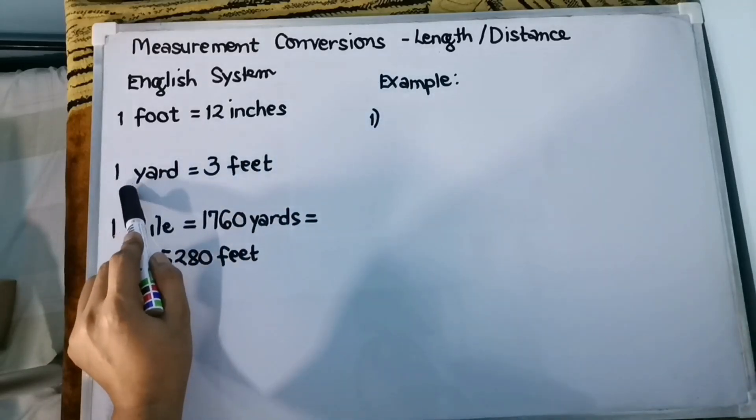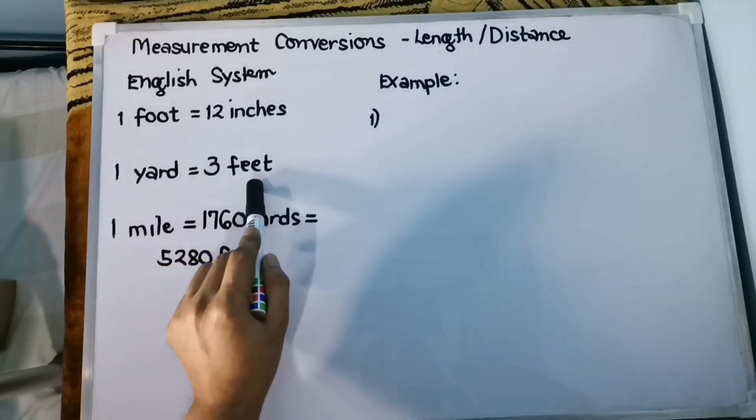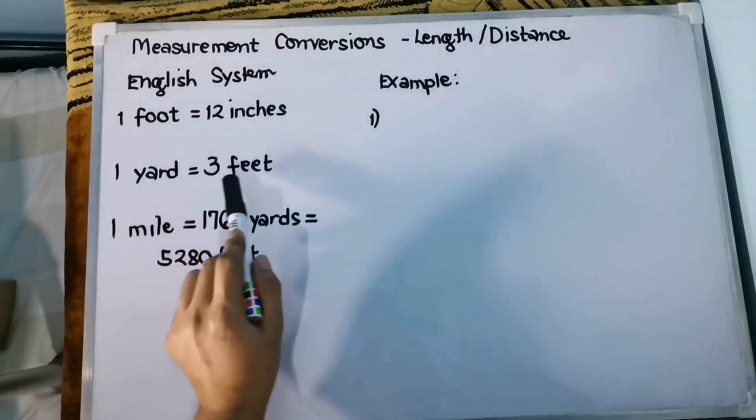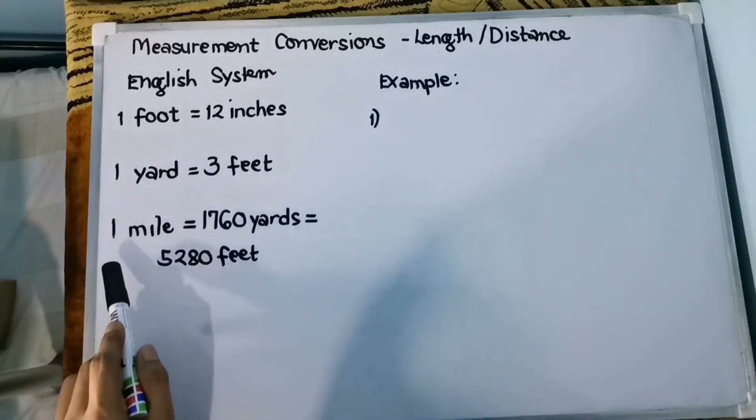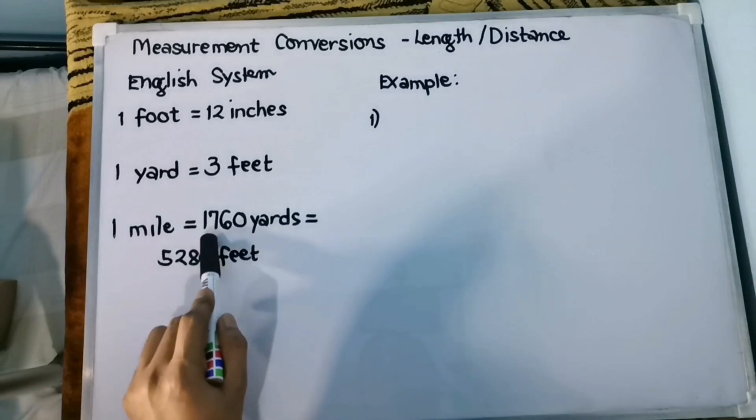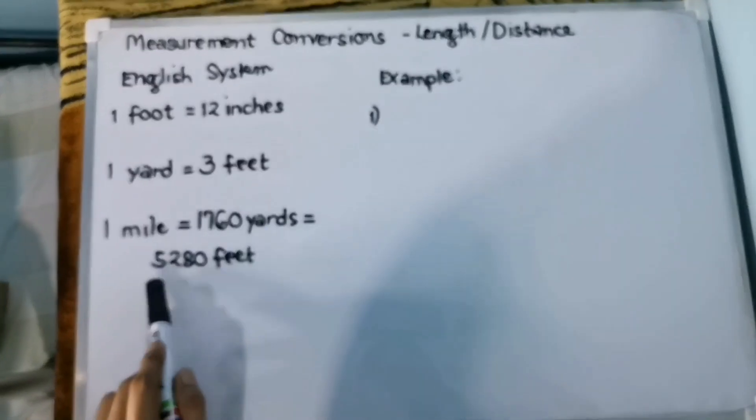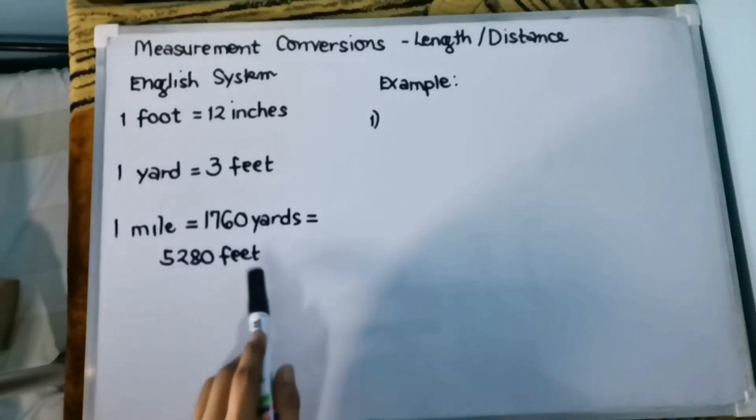Then we have 1 yard is equivalent to 3 feet. Then 1 mile is equivalent to 1,760 yards, that is also equal to 5,280 feet. So you need to remember these three conversions using the English system for length and distance.